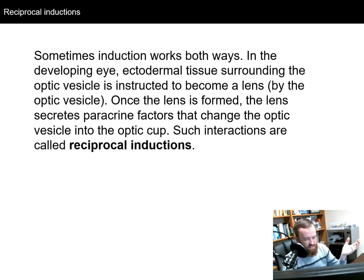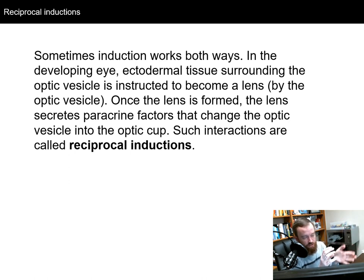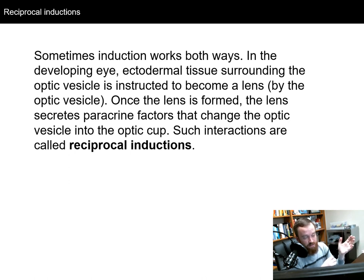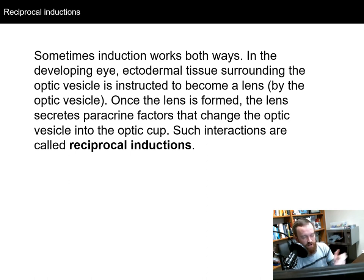Sometimes induction happens both ways. In eye development, ectodermal tissue surrounds an optic vesicle. The optic vesicle secretes paracrine factors telling surrounding ectodermal tissue to become lens tissue. Once the lens forms, the lens tissue secretes paracrine factors back to the optic vesicle, telling it to proceed to become the optic cup. They talk both ways — one says become the lens, then the lens says now become the optic cup. These are called reciprocal inductions.